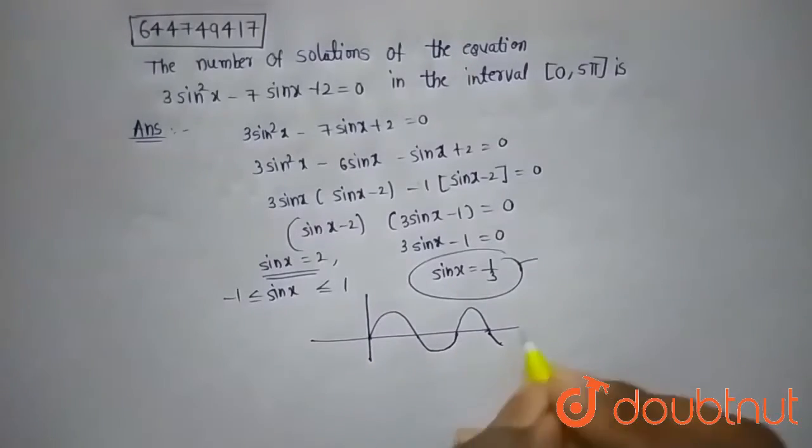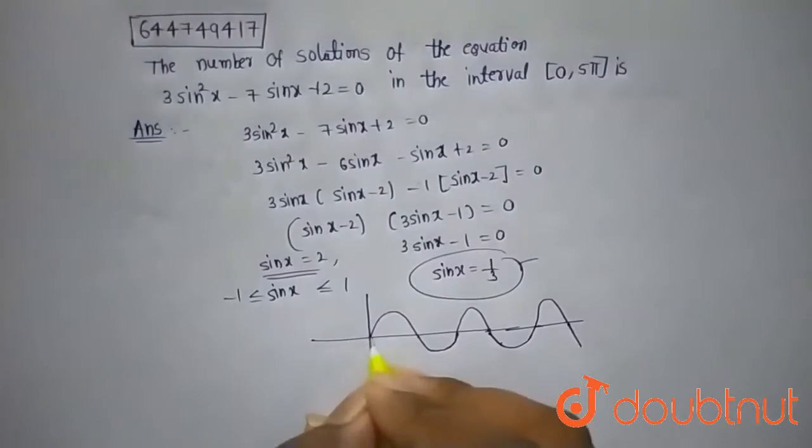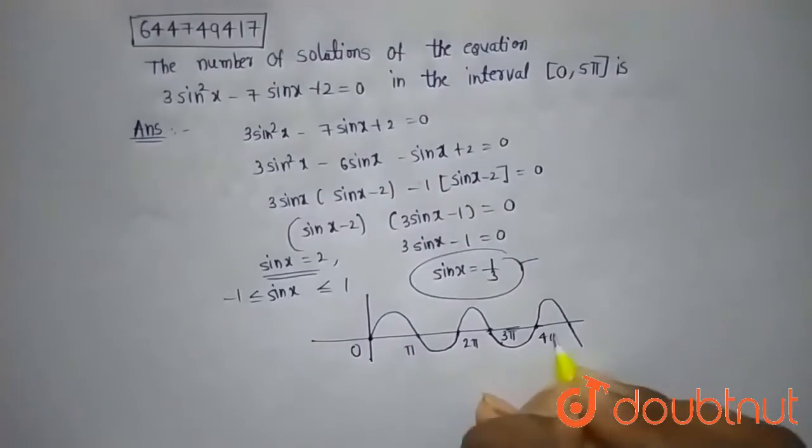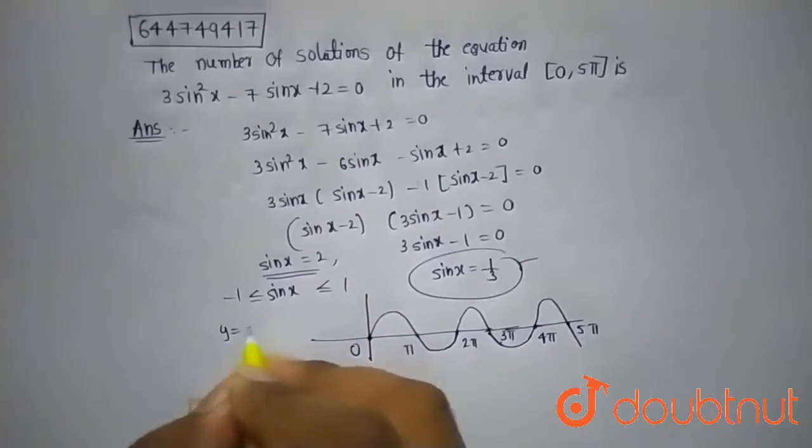This is 0, this is π, this is 2π, this is 3π, this is 4π, this is 5π. So this is the y = sin x graph, and we need y = 1/3.